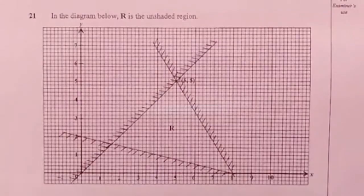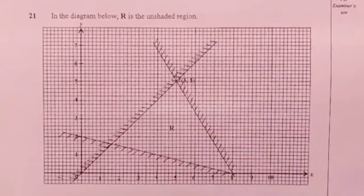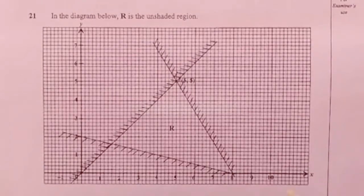Welcome back to question number 2. In this question, we are given three straight lines that have a slope — no vertical, no horizontal lines. It means that for all three lines, we are going to make use of the skill y equals mx plus c. I am going to start with the line below.